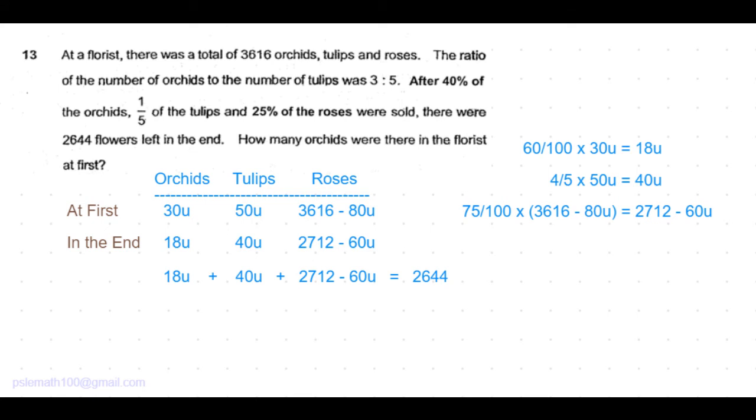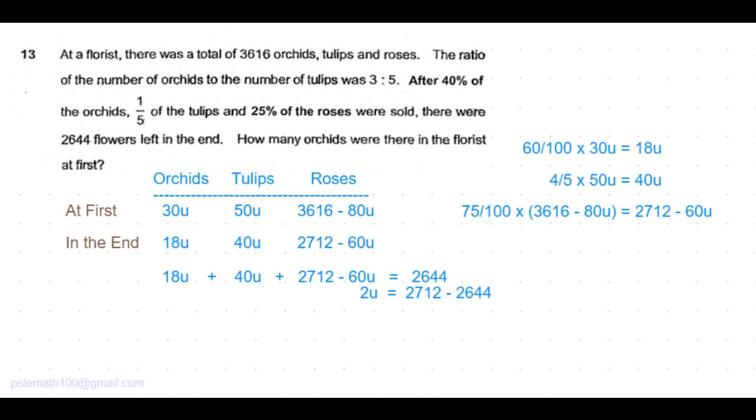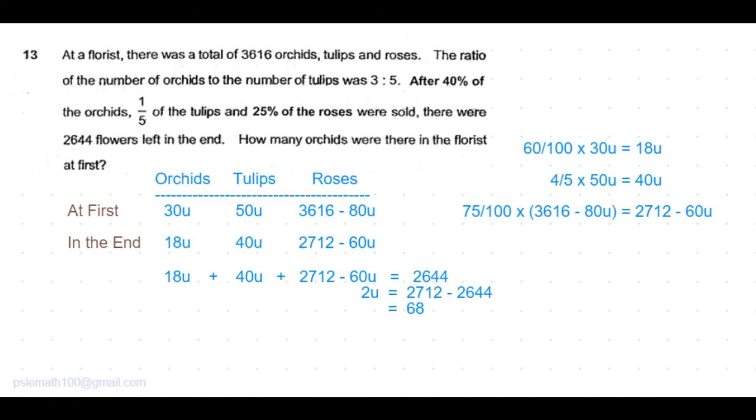18 units plus 40 units is 58 units. So 60 units minus 58 units is 2 units, which equals 2712 minus 2644, which equals 68. From there, we get the value of 1 unit to be equal to 34.